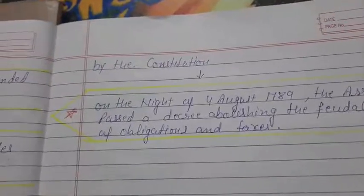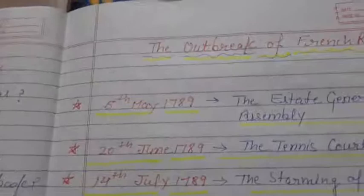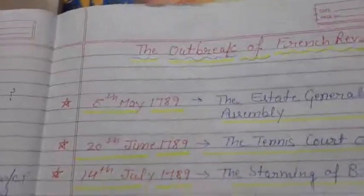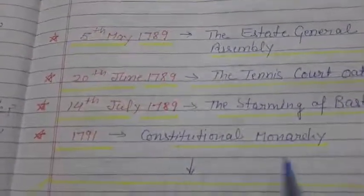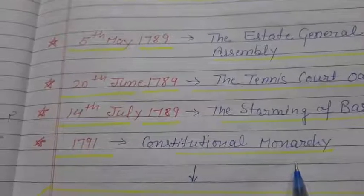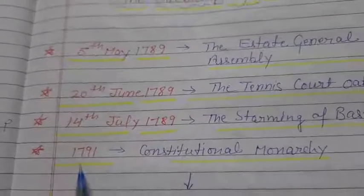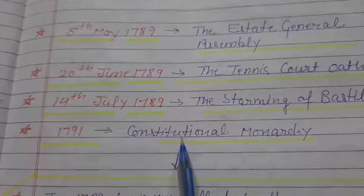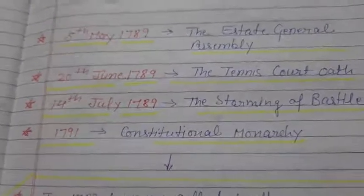This led to the abolition of the monarchy system. Now we will talk about constitutional monarchy, which was established in 1791. We will discuss this in the next video. Thank you students.